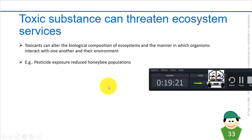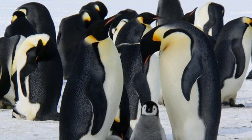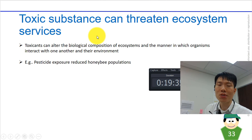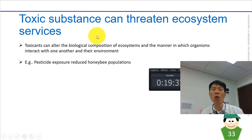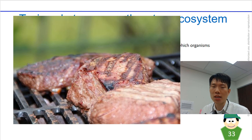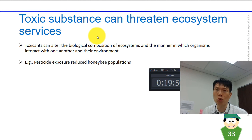Toxic substances can threaten ecosystem services by altering the biological composition of ecosystems — changing the populations of prey and predators across trophic levels and affecting how organisms interact with one another. For example, if a disease wiped out all cows in a region, we could adapt by switching to other protein sources, but disruptions can be far more complex.